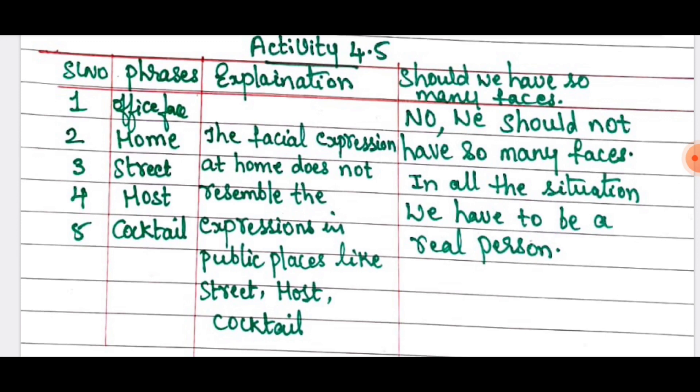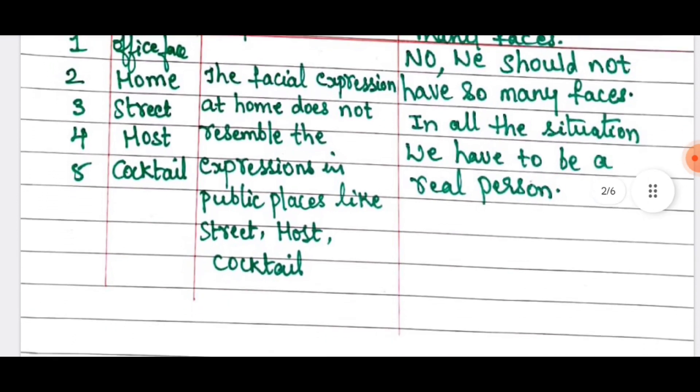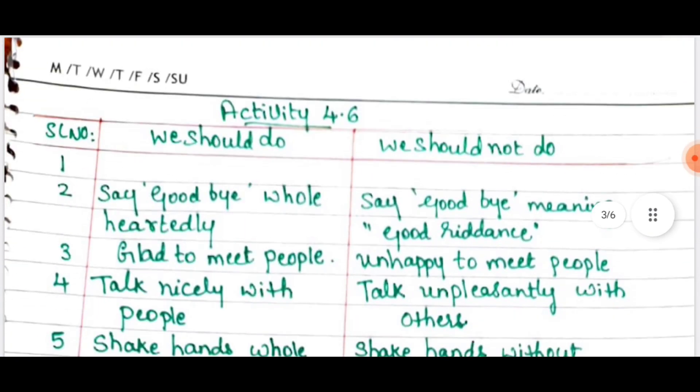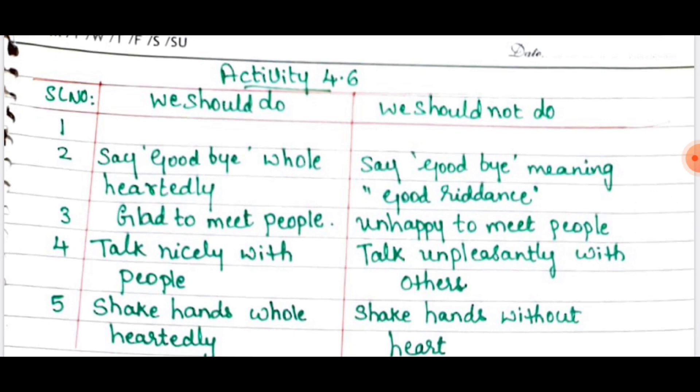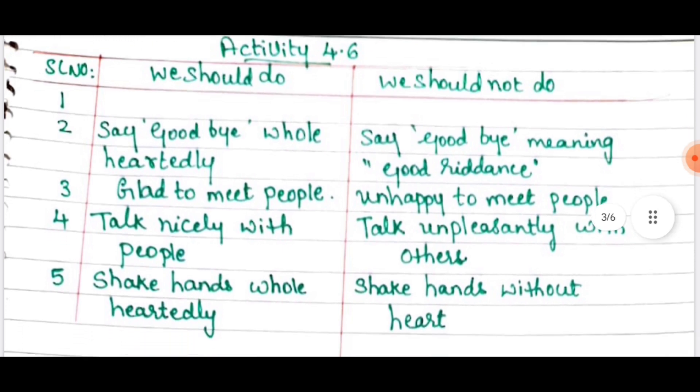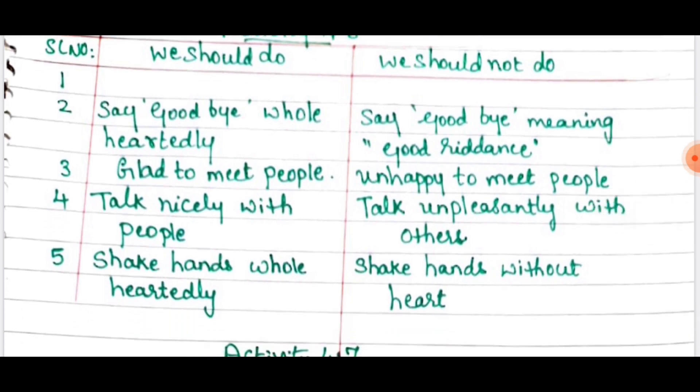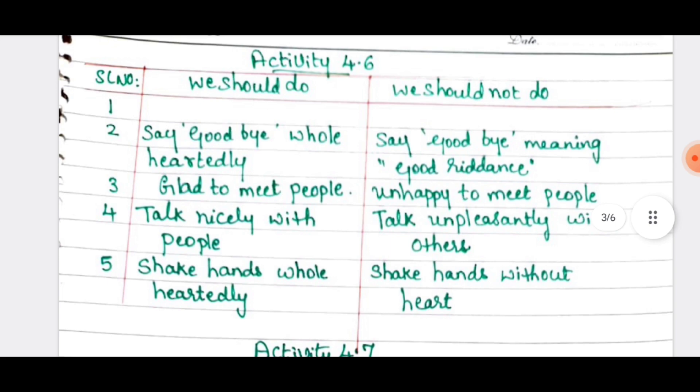The next one is activity 4.6. Read the fifth stanza and complete the table — what we should do and should not do. We should do: say goodbye wholeheartedly, be glad to meet people, talk nicely with people, shake hands wholeheartedly. We should not do: say goodbye meaning good riddance, be unhappy to meet people, talk unpleasantly with others, shake hands without heart.